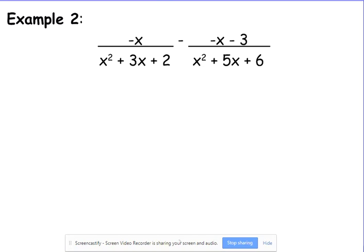Okay, so when we have denominators that are quadratic trinomials like this, your first step needs to be to factor. X squared plus 3x plus 2 factors into x plus 2 times x plus 1.